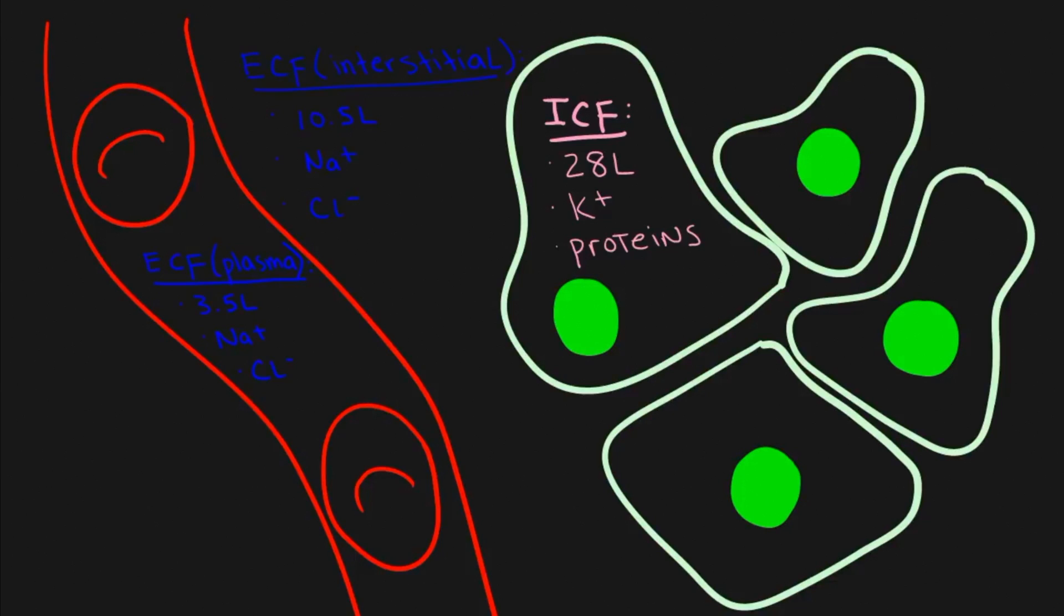For our purposes, what will be really important is to remember that certain parts of the body have a high concentration or low concentration of certain ions. For example, the ICF tends to have a very high concentration of potassium, whereas the ECF tends to have a high concentration of things like sodium and chloride.